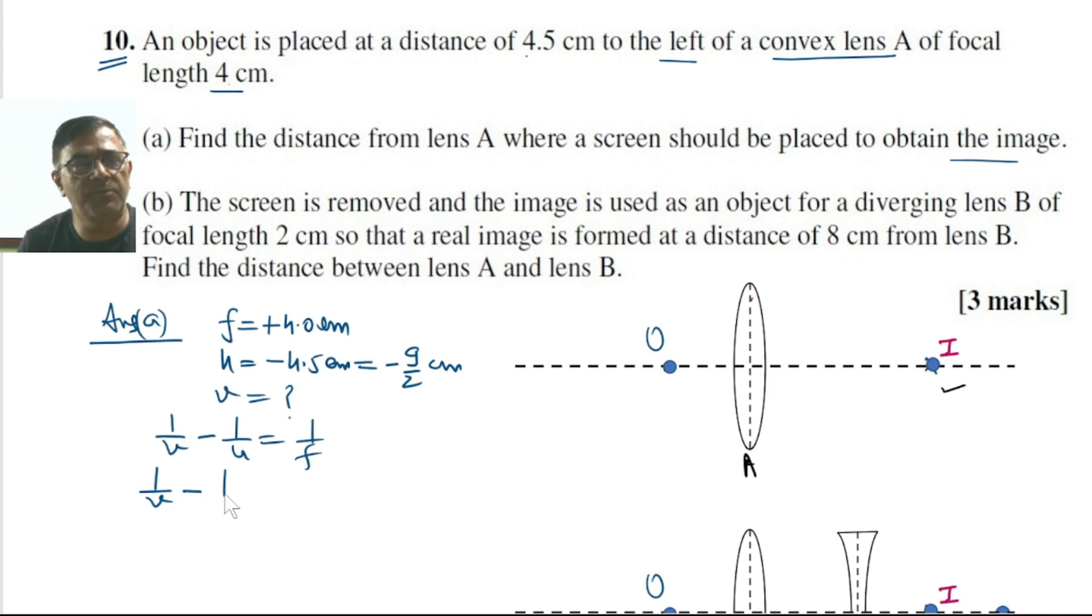1 by V minus minus 9 by 2 equals 1 by 4, or 1 by V equals 1 by 4 minus 2 by 9.